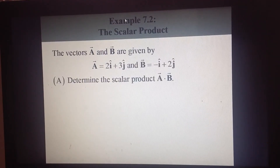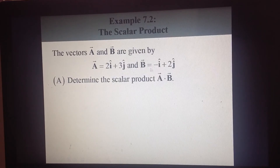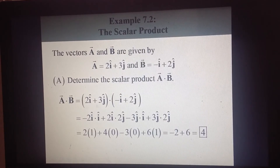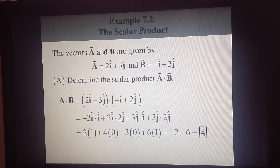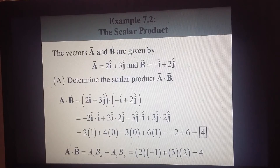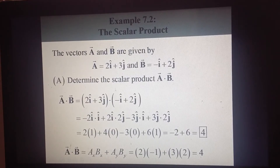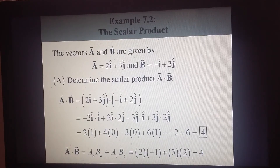Now let's look at a few examples. In example 7.2 we calculate the scalar product of two vectors a and b. Using the unit vector expansion: i dot i is one, i dot j is zero, j dot i is zero, j dot j is one — you end up getting a value of four. Using the component equation, a dot b equals a_x b_x plus a_y b_y: with a_x = 2, a_y = 3, b_x = −1, and b_y = 2, substituting everything gives the same value of four.